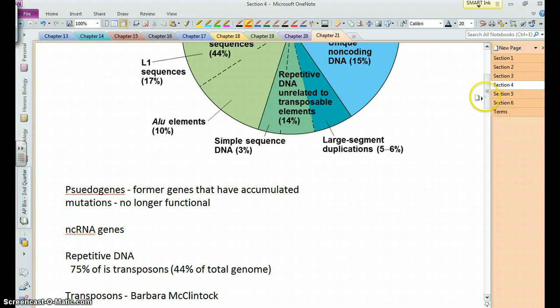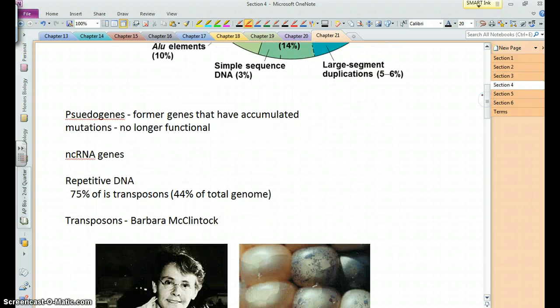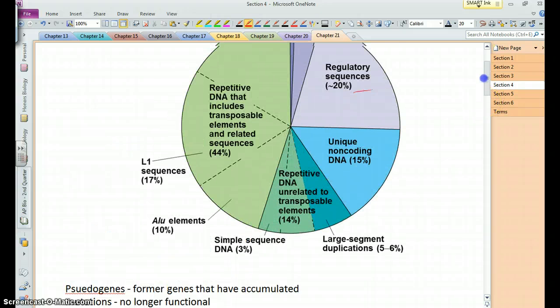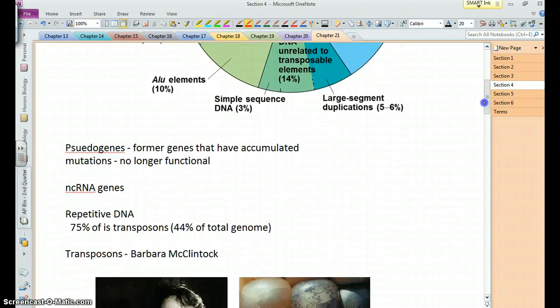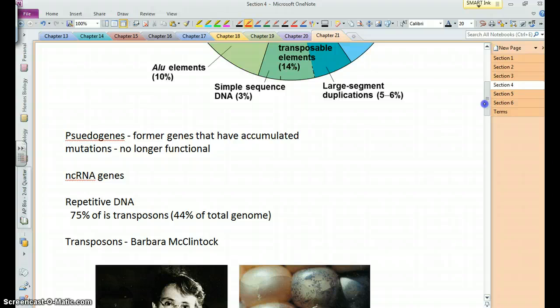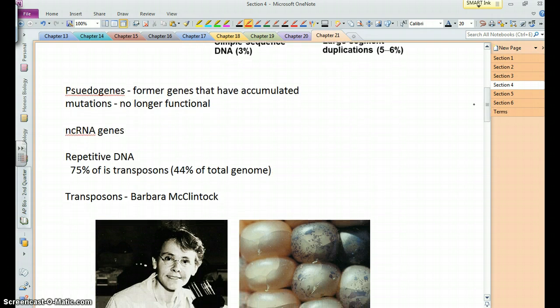So what's that stuff doing or how does it arise? First of all, well let's talk about transposons. Of the repetitive DNA you can see a lot of it are transposons or these what are known as transposable elements, approximately 75% of it, and of the total genome about 44% are these transposons. That is, 75% of the repetitive are transposons and transposons are 44% of the total.